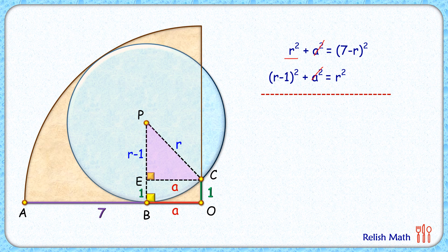LHS will be r² minus (r-1)², and RHS will be (7-r)² minus r².